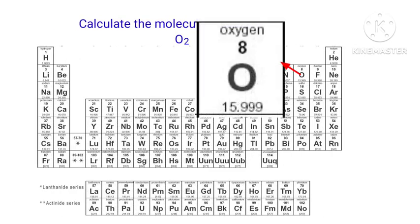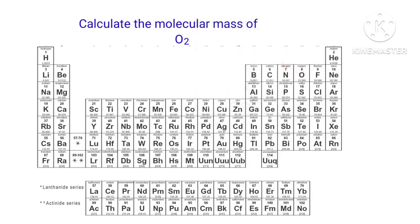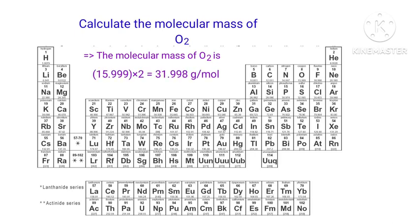The Atomic Mass of Oxygen is 15.999. In the O2 molecule, there are two oxygen atoms present. So the Molecular Mass of O2 is 15.999 x 2, which is equal to 31.998 gram per mole.